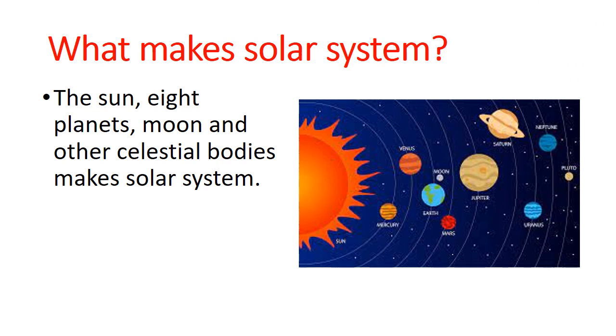What makes solar system? The sun, eight planets, moon, and some other celestial bodies make solar system.